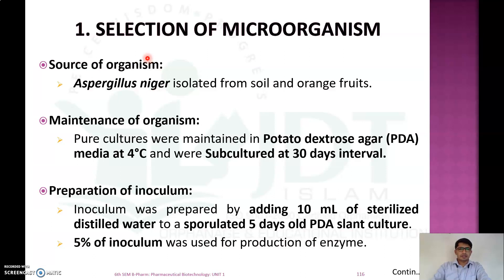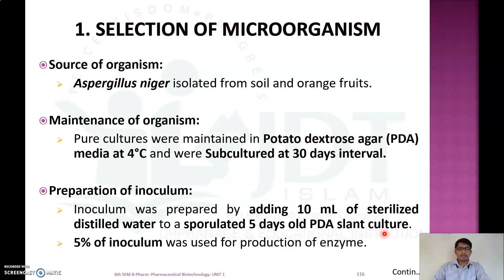Aspergillus niger, usually isolated from soil and orange fruit, is used for peroxidase production. Pure cultures are maintained in potato dextrose agar (PDA) media at 4°C and subcultured at 30-day intervals. The inoculum is prepared by adding 10 ml of sterilized distilled water to a sporulated five-day-old potato dextrose slant culture, and 5% of this inoculum is used in the production process.